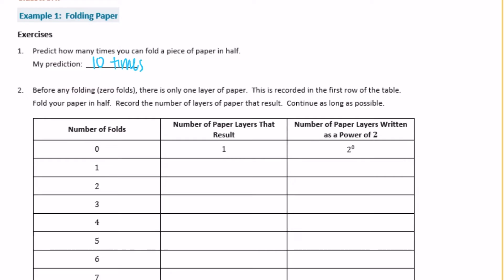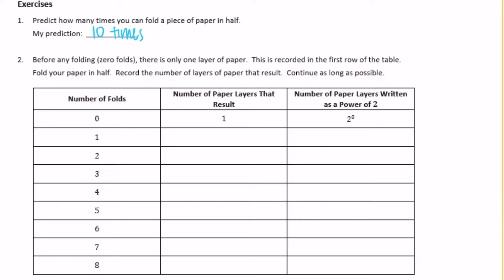Number 2: before any folding — zero folds — there is only one layer. So if you're just looking at it, there's your piece of paper, one layer. This is recorded on the first row of the table. Fold your paper in half and record the number of layers. When we had zero folds, there was just one layer, written as 2 to the power of zero. With one fold, now we have two layers, and that is 2 to the first power.